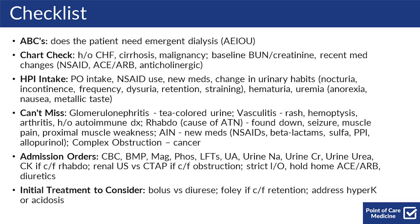For admission orders, always order a CBC, BMP, MAG, phosphorus, LFTs, UA, urine sodium, urine creatinine, and urine urea. You could order CK if you're worried about rhabdomyolysis, a renal ultrasound versus a CT abdomen/pelvis if you're concerned for obstruction, order strict ins and outs, and hold any home ACEs, ARBs, and diuretics.